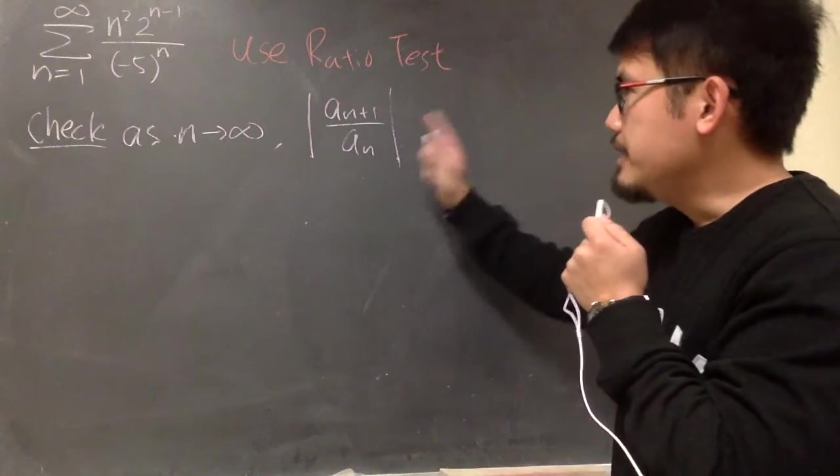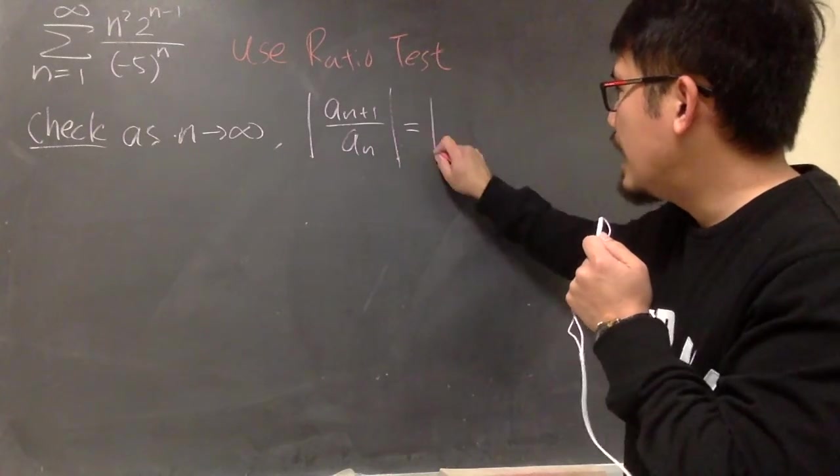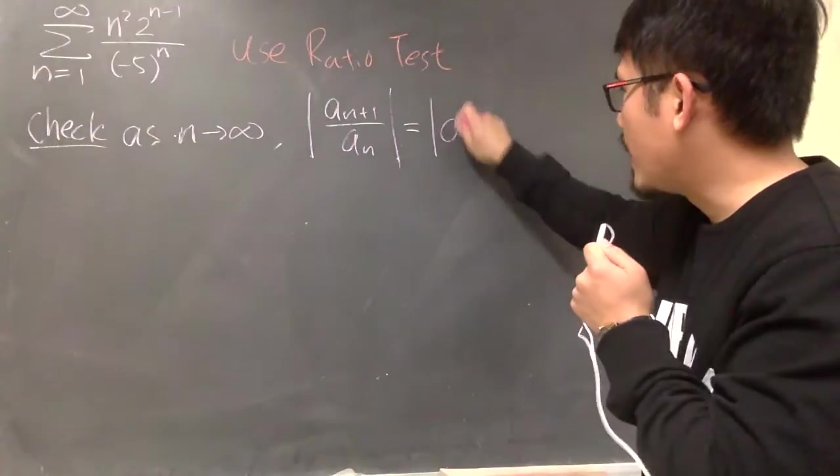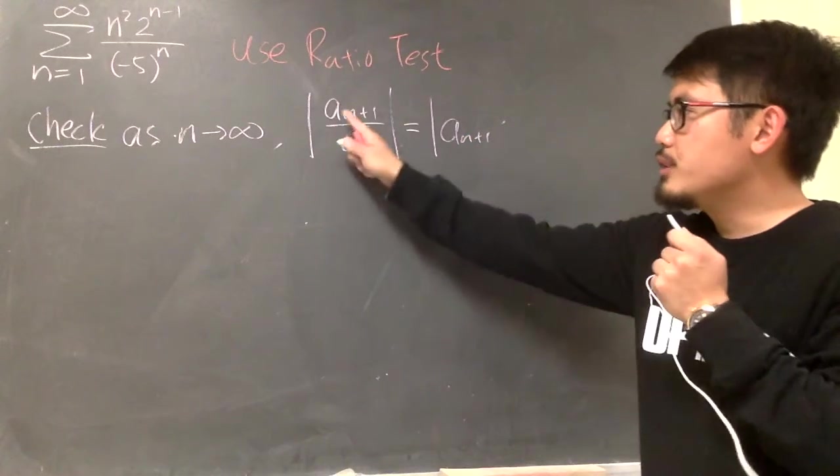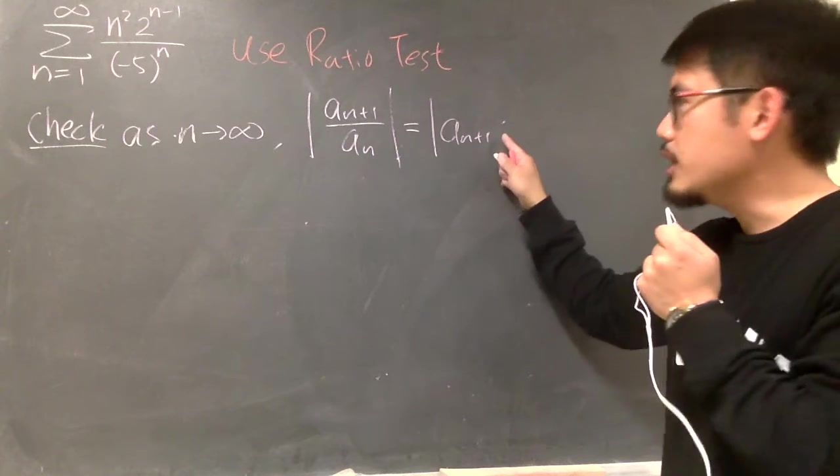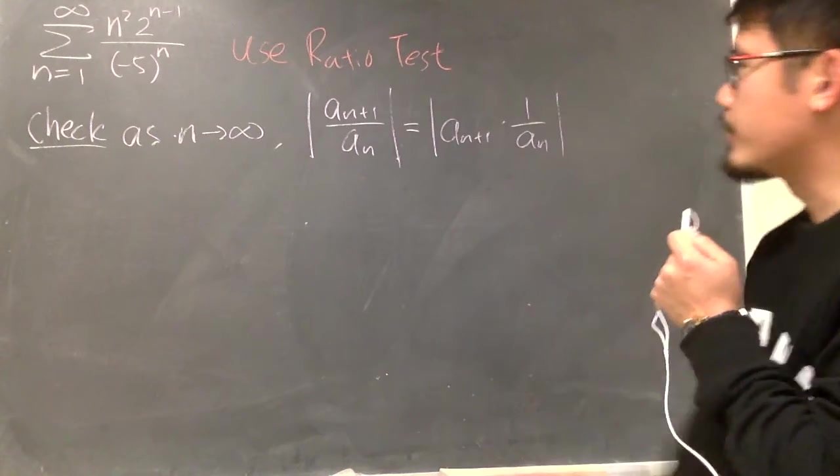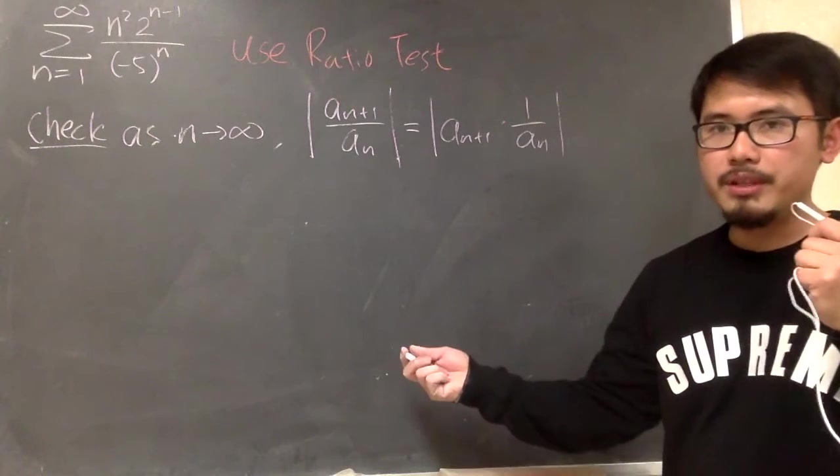But then, the easier way to set up this is look at this as the following. This is the same as absolute value a n plus 1 times, instead of looking at this as dividing by a n, we can look at this as multiplying by the reciprocal of the a n. And now let me put this in action for you guys.